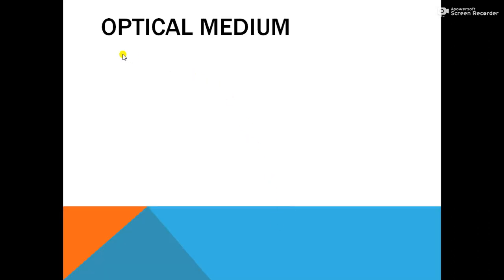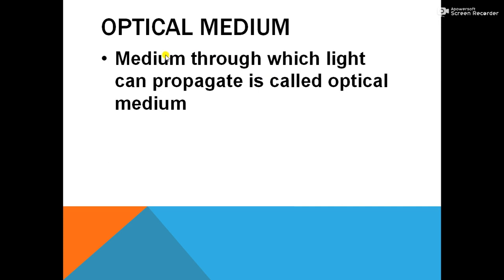Let us discuss about the term optical medium. A medium through which light can propagate is called an optical medium. That means every transparent medium can be considered an optical medium. For example, air, water, and glass are examples of optical medium.